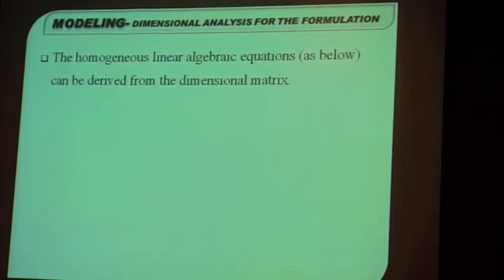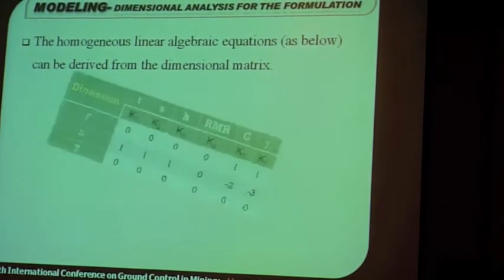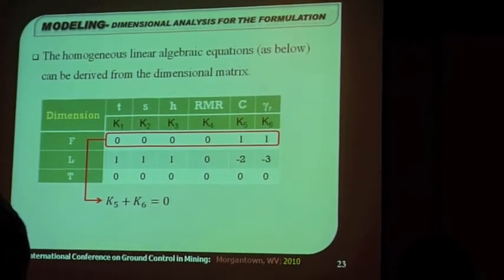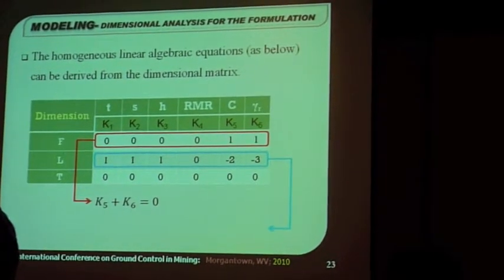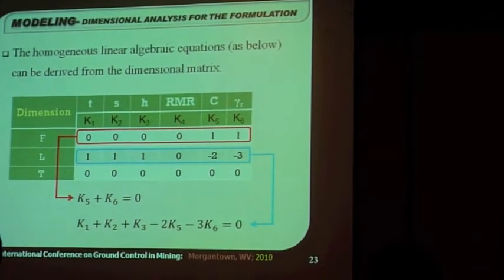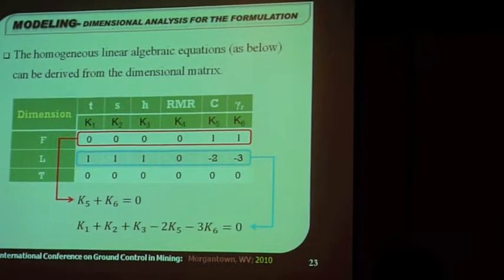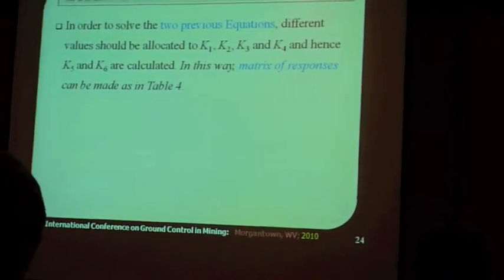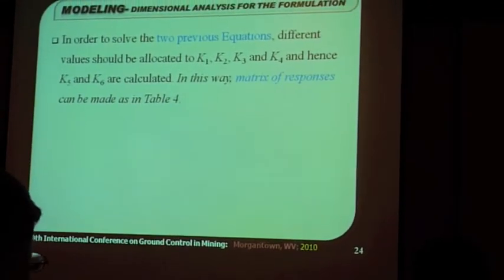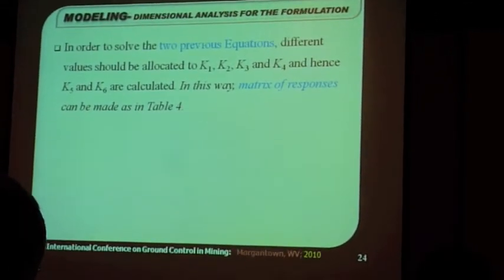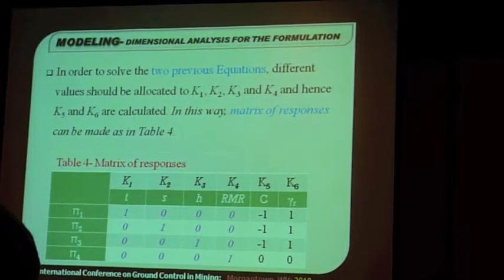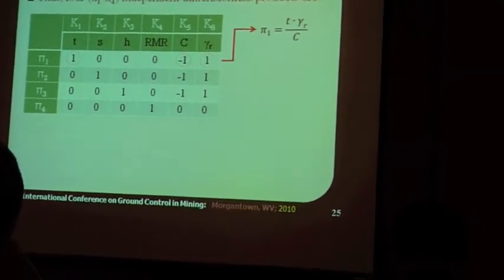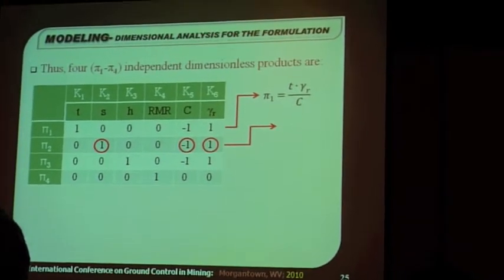Now, the homogeneous linear algebraic equation can be derived from the dimensional matrix. Now, all we have to do now is to solve these simultaneous equations, which we do by putting values for K1 to K4, and calculating the values of K5 and K6, which gives us the matrix of responses, as in this table. The matrix of responses, and in this way, we get the four independent dimensionless products.